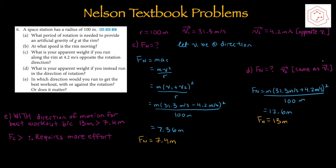Part D: what's your apparent weight if you run in the direction of rotation? This time v2 is the same direction as v1, so we add 4.2 to 31.3 instead of subtracting. Plugging those numbers in, normal force equals 13 × mass. Part E: in which direction would you run for the best workout — with or against rotation? Run with the direction of motion, because normal force is 13m in that scenario versus 7.4m against rotation. The greater centripetal force requires more effort, leading to a better workout.